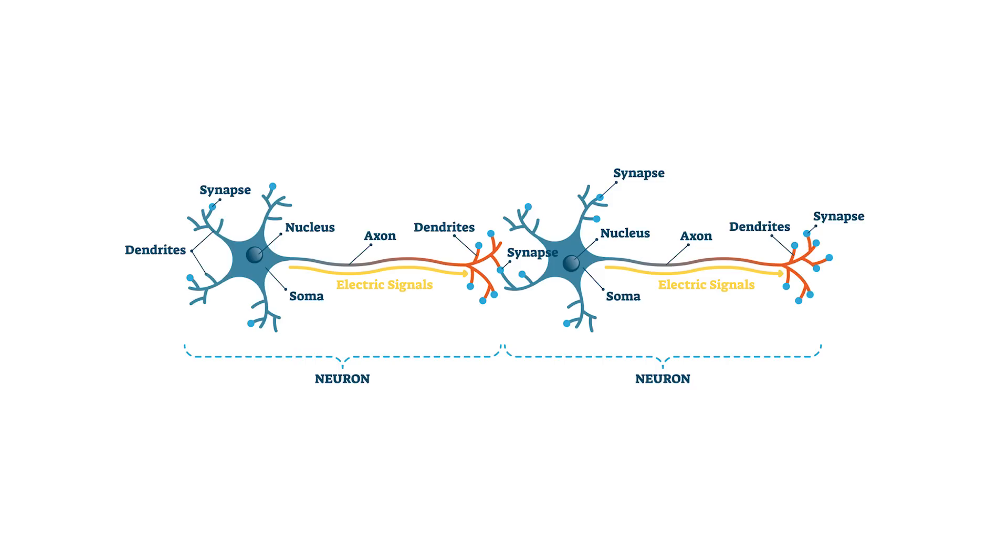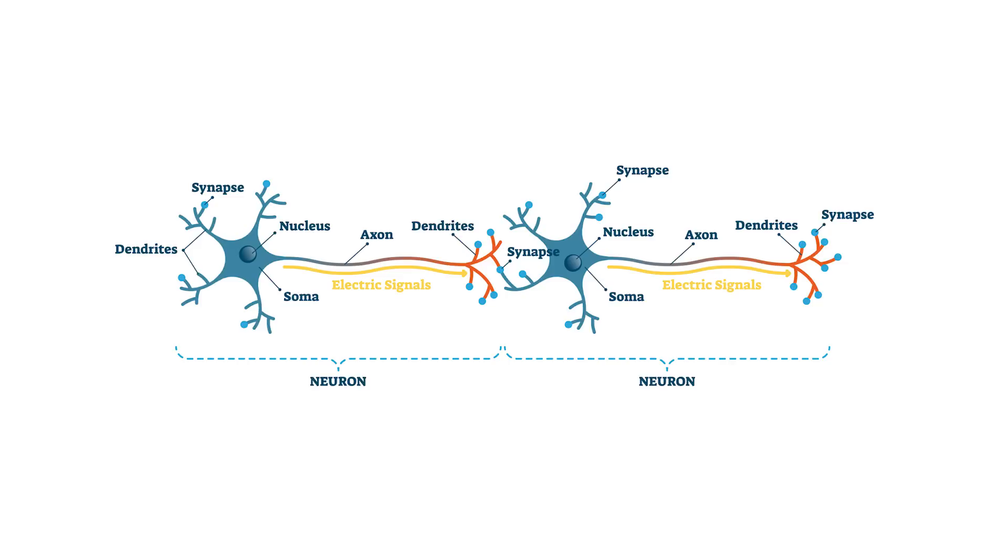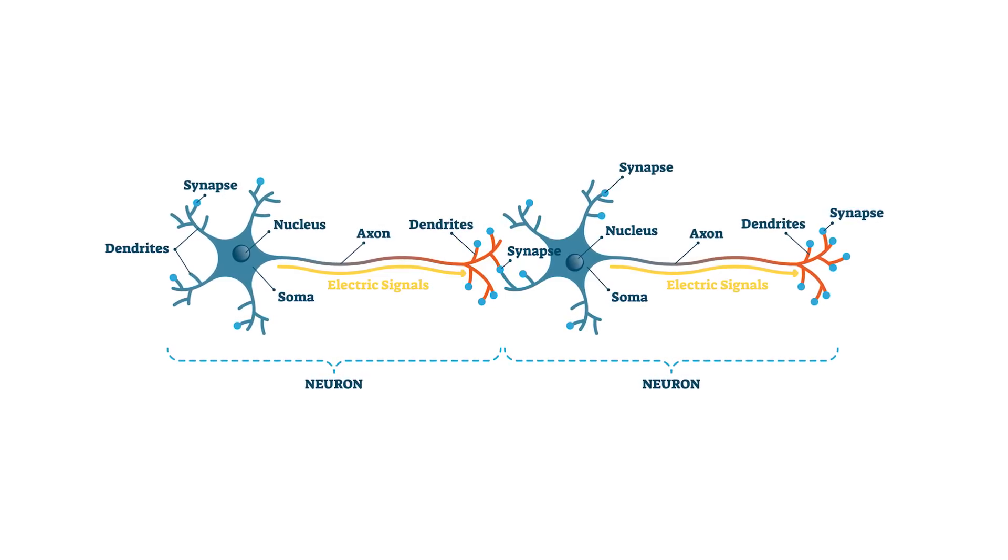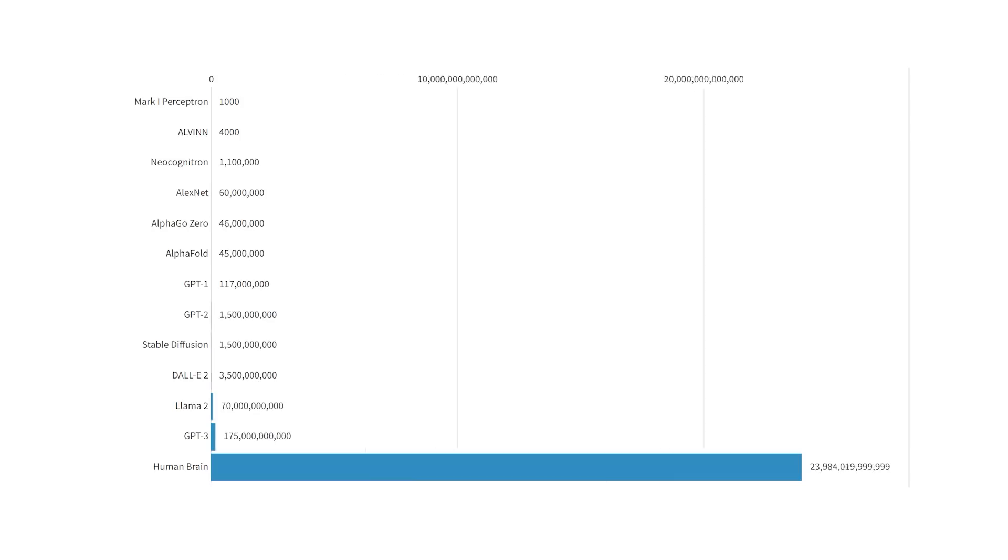So how does this all compare to a human brain? A human brain obviously doesn't have parameters, like a computer program does, but the most comparable metric would probably be the number of neuron connections, or synapses. Realistically, each synapse is pretty complex and can probably contain information equivalent to multiple parameters. But for simplicity's sake, let's compare the number of parameters in all these AI models to the number of synapses in the human brain. It is estimated that the human brain has 100 trillion synapses.